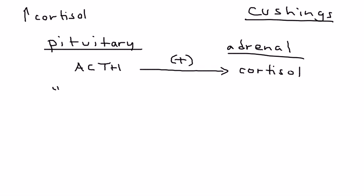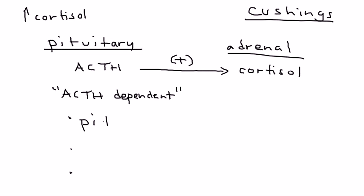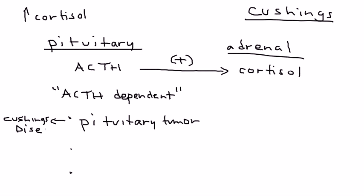There are several types of Cushing's. The first category is ACTH-dependent, meaning the problem is happening because of ACTH. The first subtype is when the pituitary has a tumor and is secreting large amounts of ACTH. When that happens, it's actually called Cushing's disease — it's the only type that has a different name.